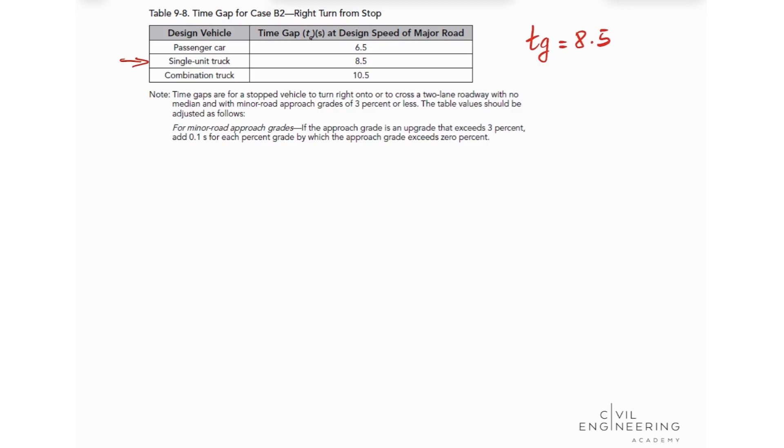But we have some notes here that we need to pay attention. So let's see what the note says. For minor road approach grades, if the approach grade is an upgrade that exceeds 3%, we need to add 0.1 seconds for each percent grade by which the approach grade exceeds 0%. So our approach grade is actually 2.5%. So we are good here because this does not exceed 3%. So we don't need to do anything.